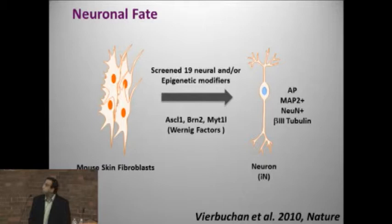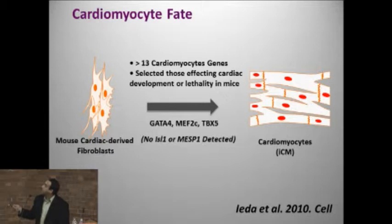More recently, a student from one of our Alan Taylor Prize winners — Rudy Jaenisch's group — screened 15 factors for neural and epigenetic modifiers and were able to show that these factors could take mouse skin cells and convert them into induced neurons. This was also shown by Deepak Srivastava's group at the Gladstone, who took mouse cardiac fibroblasts and using specific factors generated induced cardiomyocytes. In both cases these are unilineage mature cells.